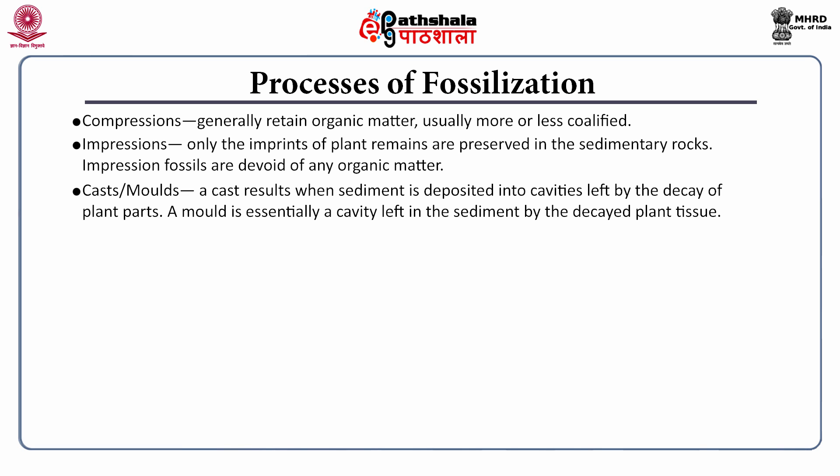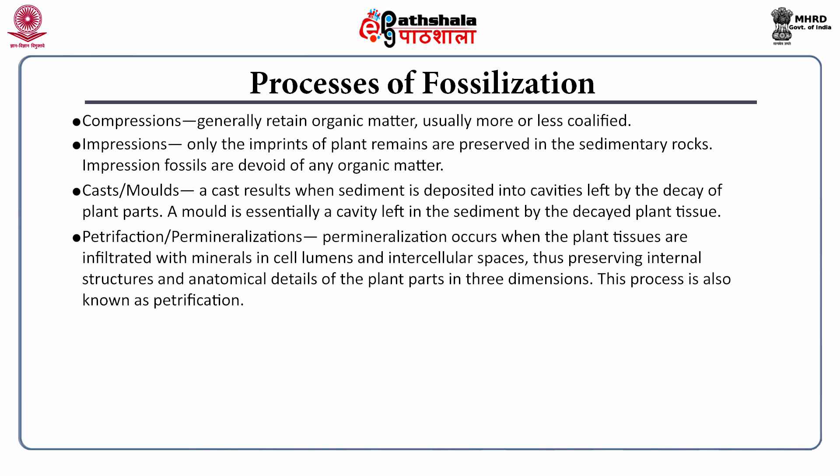Then cast and molds. A cast is formed when sediment is deposited into cavities left by the decay of plant parts. A mold is essentially a cavity left in the sediment by the decayed plant tissue. Then petrification, or permineralization. Permineralization occurs when plant tissues are infiltrated with minerals in cell lumens and intercellular spaces, thus preserving internal structures and anatomical details of the plant parts in three dimensions. This process is also known as petrification.